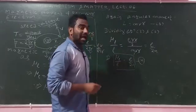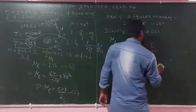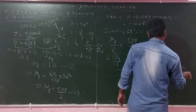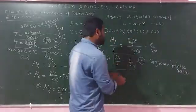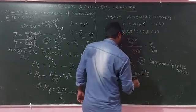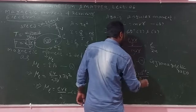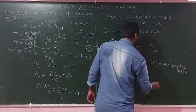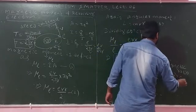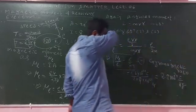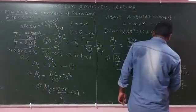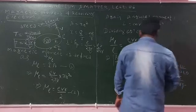This ratio mu_L divided by L equals E divided by 2M is called the gyromagnetic ratio. The electron charge is 1.6 times 10 to the power minus 19 C. The mass of the electron is 9.1 times 10 to the power minus 31 kg. So the gyromagnetic ratio is approximately 8.8 times 10 to the power 10 C per kg.